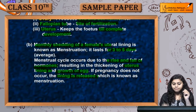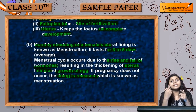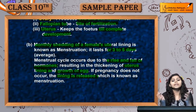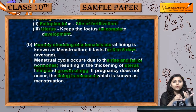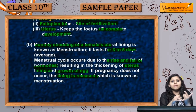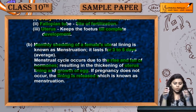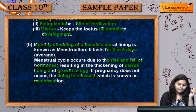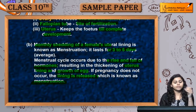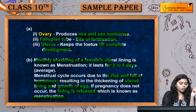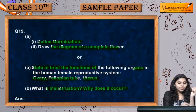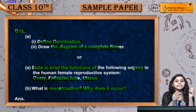Jiski wajah se lining release hogi, bleeding hogi, and blood and mucus will come out of the vagina. Is poore process ko bolte hain menstruation. This was question number 19.